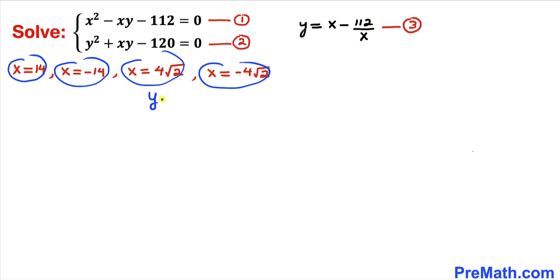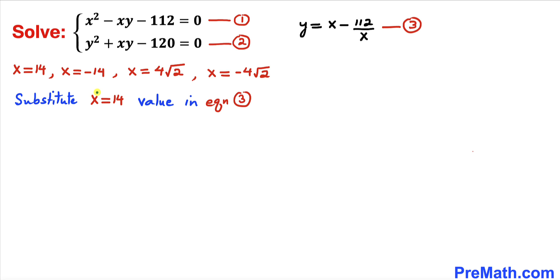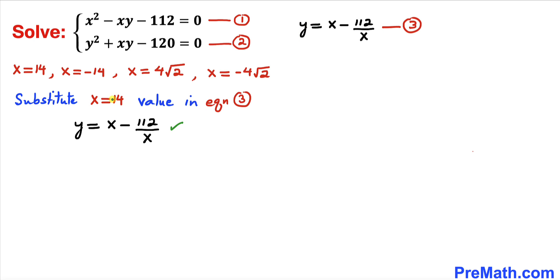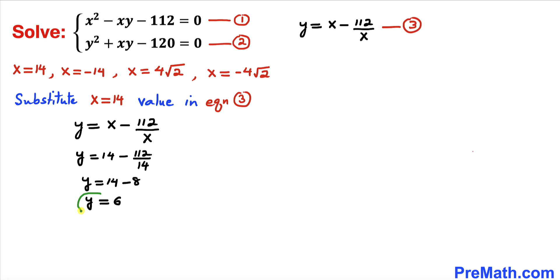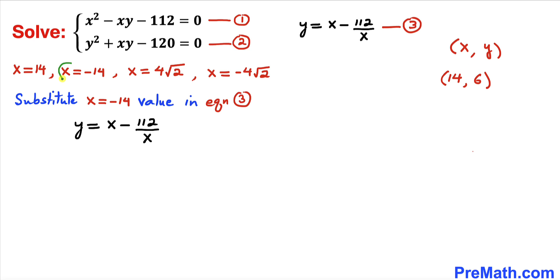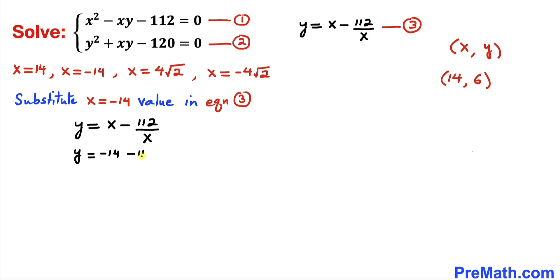Now we find the corresponding y values using equation three. Substituting x = 14: y = 14 - 112/14 = 14 - 8 = 6. So the first solution is (14, 6). Substituting x = -14: y = -14 - 112/(-14) = -14 + 8 = -6. So the second solution is (-14, -6).